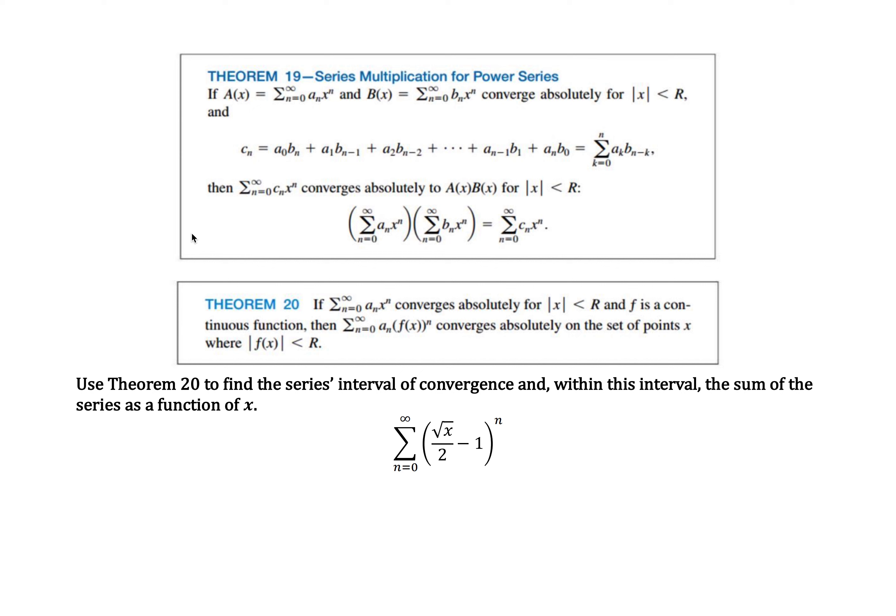As we continue talking about power series, we've got two more theorems. The first one is series multiplication. If we have a series a sub n that converges to a of x, and a series b sub n which converges to b of x, and they converge absolutely within a certain radius of convergence, then a third series c sub n, created by multiplying those two series, will also be absolutely convergent within that radius and will converge to the product a of x times b of x.